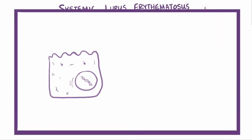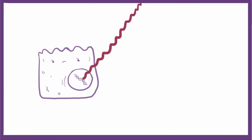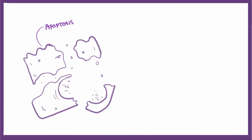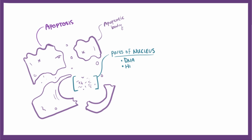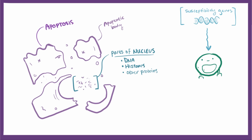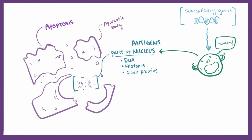Given enough UV rays — think sunburn — a cell's DNA can become so badly damaged that the cell undergoes programmed cell death, or apoptosis. This produces tiny apoptotic bodies and exposes the insides of the cell, including parts of the nucleus like DNA, histones, and other proteins, to the rest of the body. Susceptibility genes make immune cells more likely to treat these as foreign antigens — nuclear antigens — and attack them.